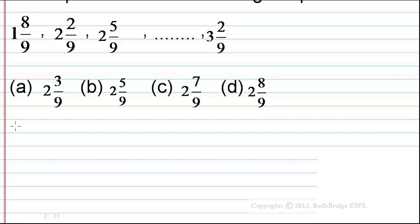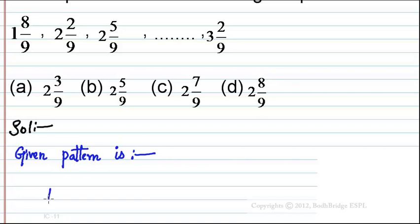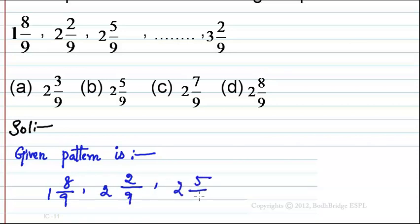Now let's look at the solution. The given pattern is: 1 and 8/9, 2 and 2/9, 2 and 5/9 — and here we have to find the value — followed by 3 and 2/9.